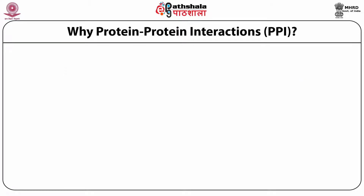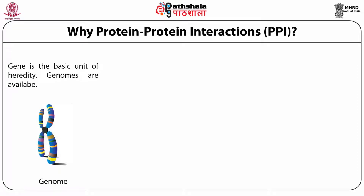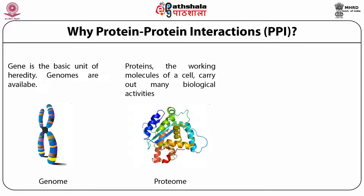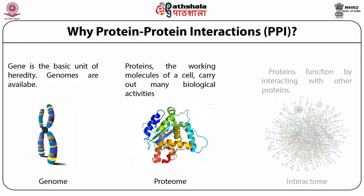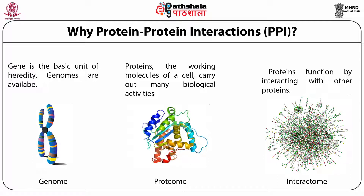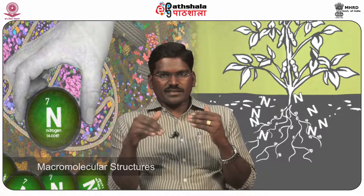Protein-protein interaction is very important because the gene is the basic unit of heredity. Genomes are available and proteins, the working molecules of a cell, carry out many biological activities. Proteins function by interacting with other proteins to give an interactome. Protein interaction generally means physical contact between proteins and their interacting partners. Proteins associate physically to create macromolecular structures of various complexities and heterogeneities — protein pairs can form dimers, multi-protein complexes, or long chains.